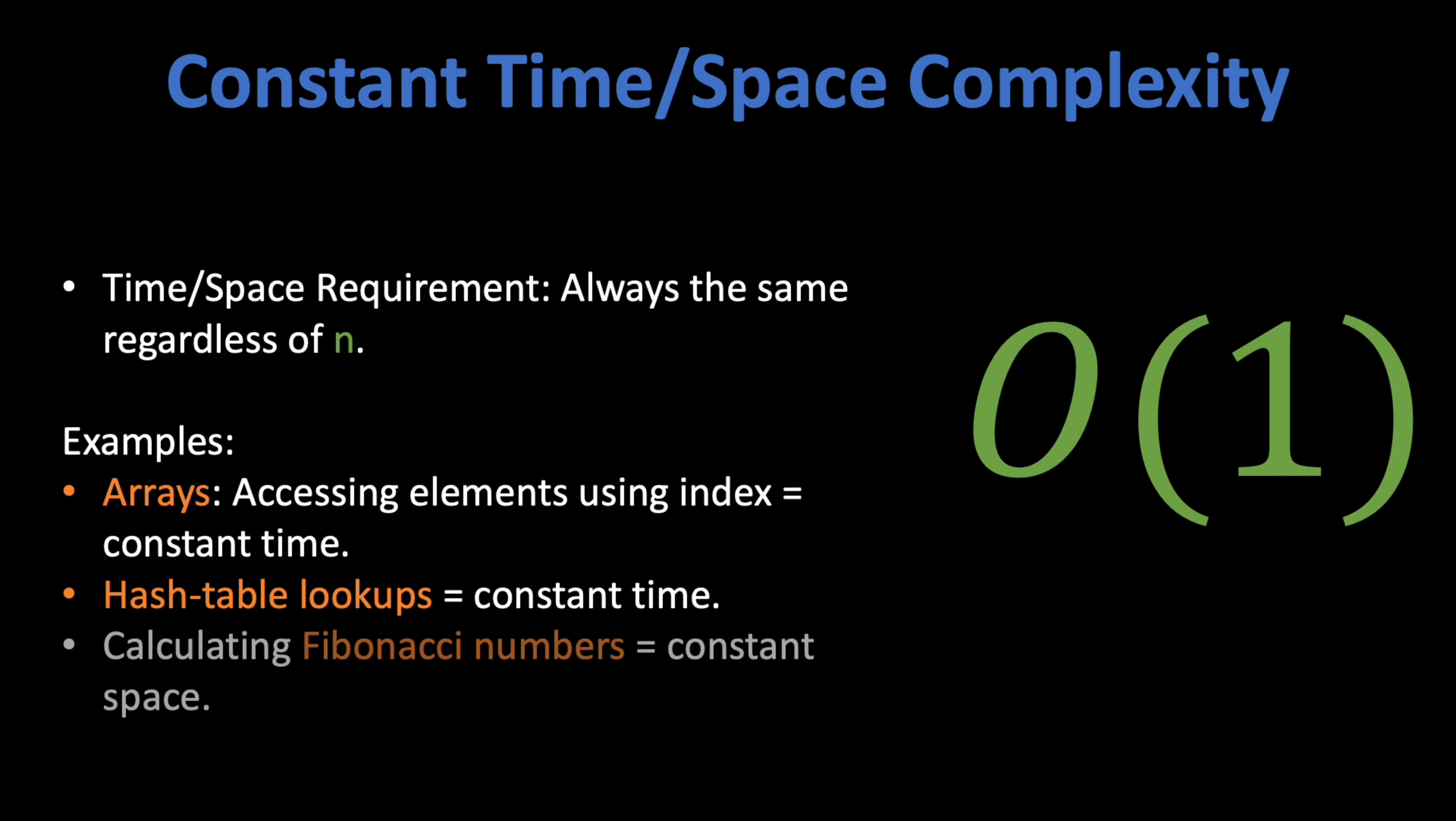When it comes to constant space complexity, calculating Fibonacci numbers is a great example. To calculate the next Fibonacci number, all you need to keep in the memory is the previous two Fibonacci numbers. Hence, you will always use a constant amount of memory no matter how big the Fibonacci number that you are trying to calculate.